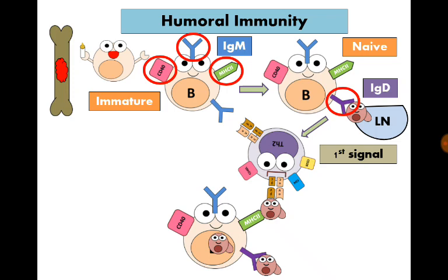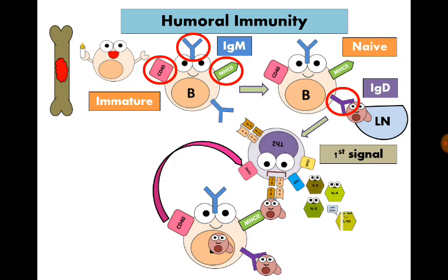T helper 2 cell attaches to the antigen then the CD40 molecule on the surface of B lymphocytes binds to the CD40 ligand on the surface of the T helper 2 cell. So the T helper 2 cell secretes interleukin 4, interleukin 5, interleukin 6 and interleukin 10 which deliver the second signal in B cell activation.